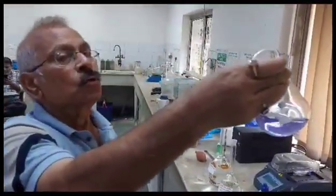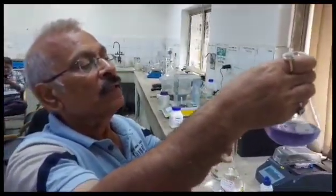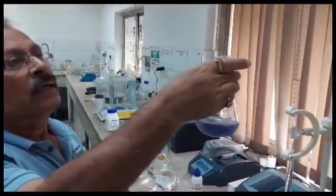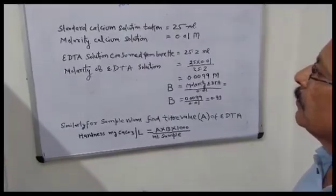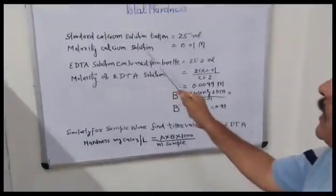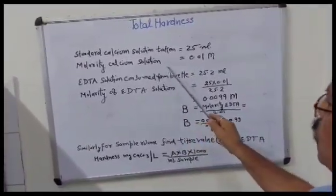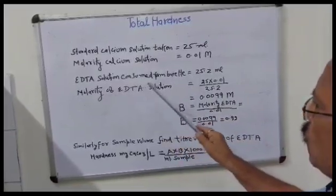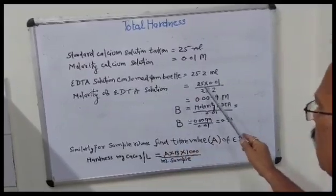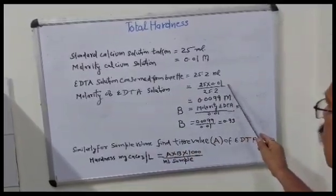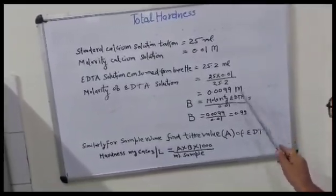Red changing to sky blue is the end point. We are now finding the molarity of the EDTA solution. Standard calcium solution taken is 25 ml in the conical flask, molarity of calcium solution 0.01 M. EDTA solution consumed from burette is 25.2 ml. Molarity of EDTA solution = 25 × 0.01 / 25.2 = 0.009921 M.